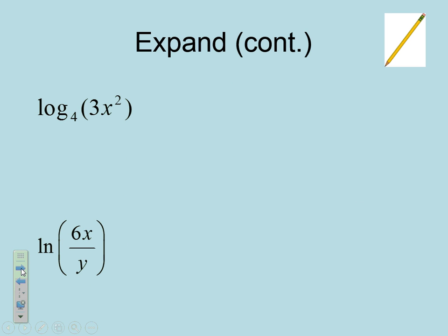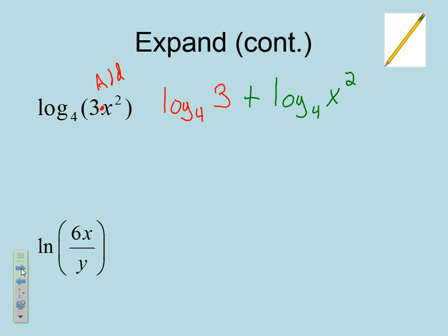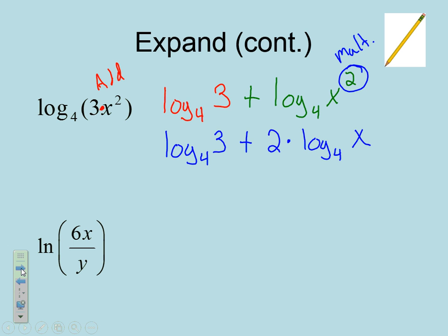We have two more examples on expansion. This one has a couple things going on. First I'm going to get rid of the multiplication — multiplication expands to addition. So I have log base 4 of 3 plus log base 4 of x squared. Now everything has to be by itself; we can't have exponents, so we have to get rid of this. To get rid of the exponent, that 2 goes out in front. So the final answer is log base 4 of 3 plus 2 times log base 4 of x.